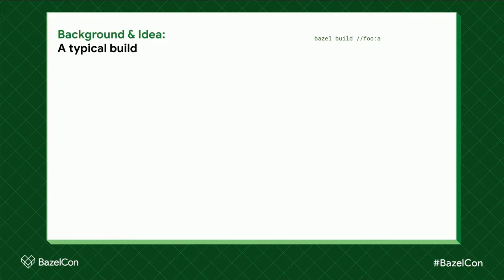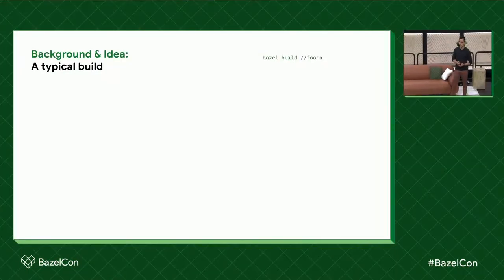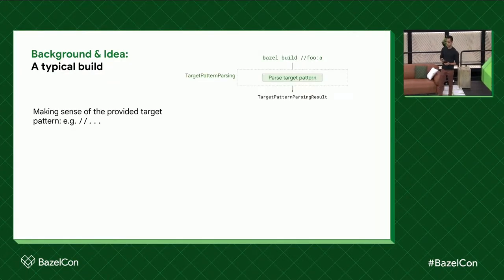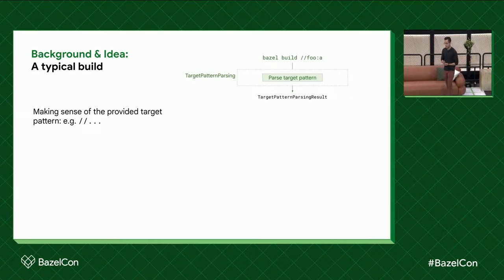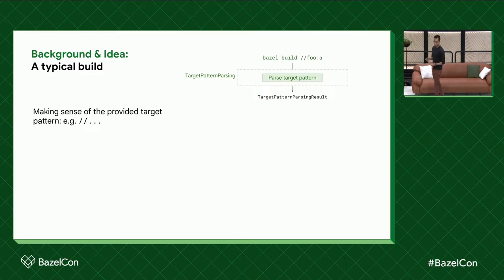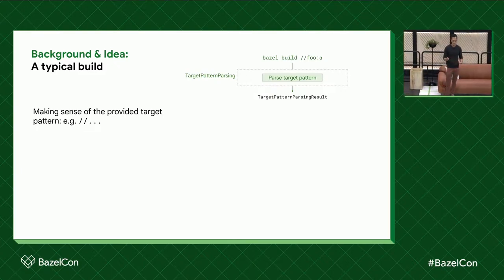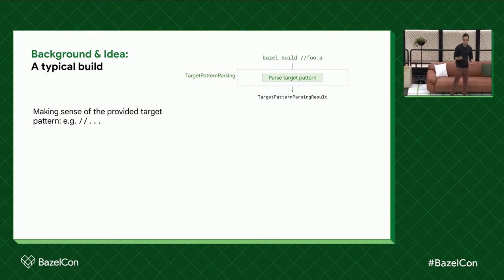To answer that, let's look at a typical Bazel build. At the top corner here you can see a fictional target 'foo/a' and we're just building that with Bazel. The first phase is target pattern parsing — this is where Bazel tries to make sense of your target pattern, for example when you specify '...'. This phase is just here for completeness and isn't really relevant for the rest of the talk.